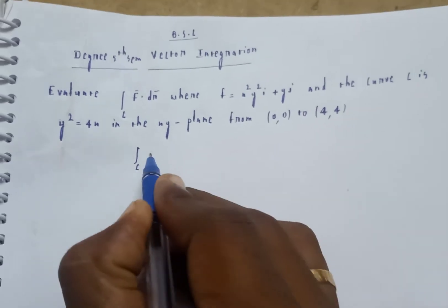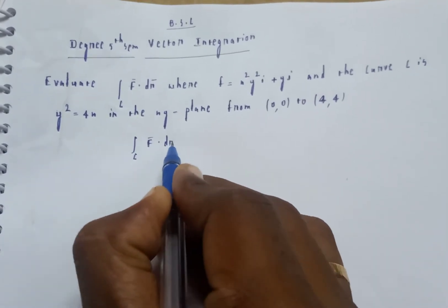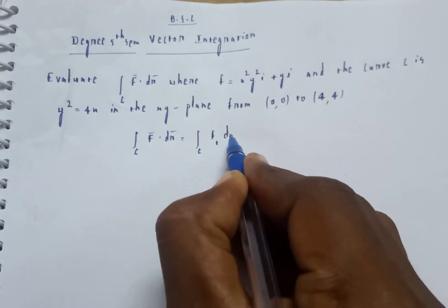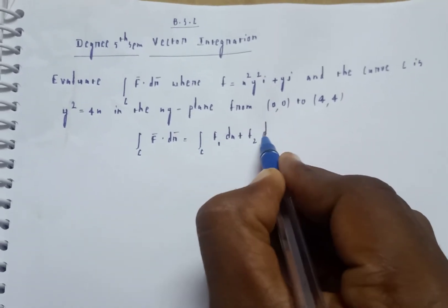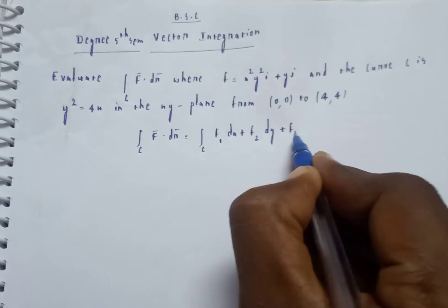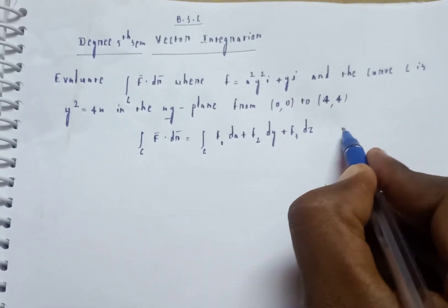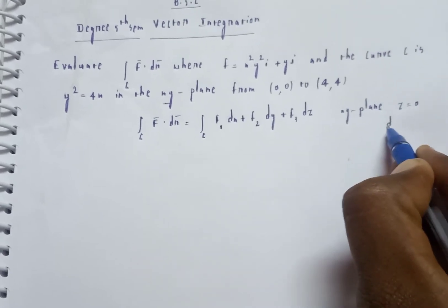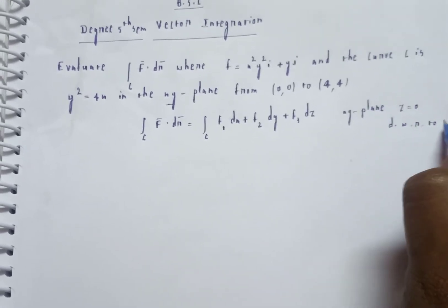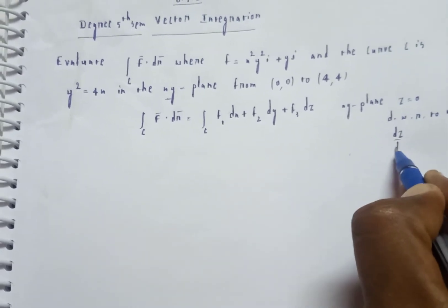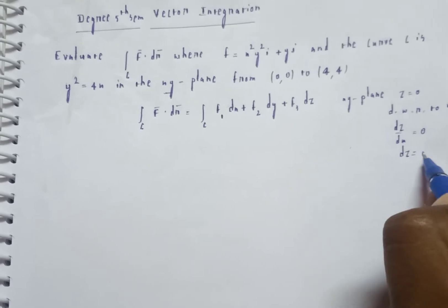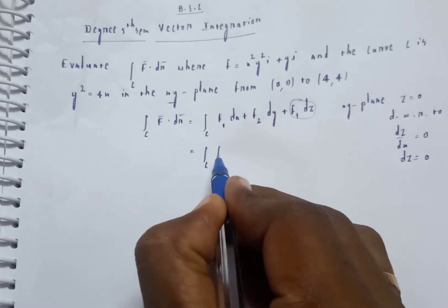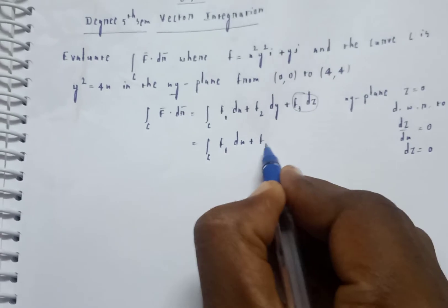We use the formula: integral over C of F dot dr equals integral of f1 dx plus f2 dy plus f3 dz. Since the problem is in the xy plane, the z component is zero, so dz is equal to 0. Therefore the integral reduces to integral of f1 dx plus f2 dy.